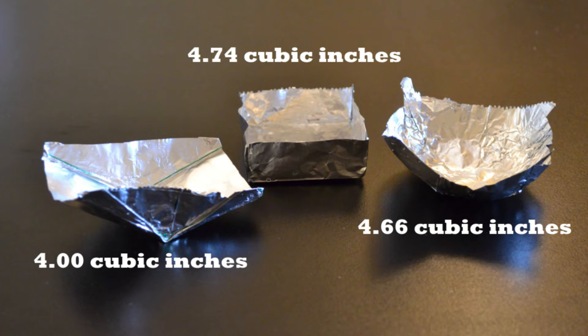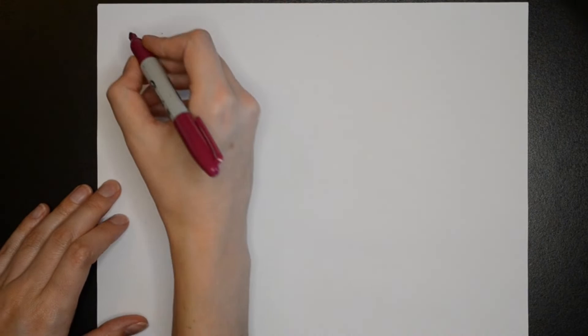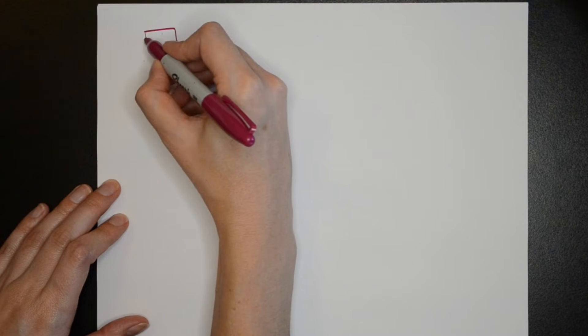Now that we know the maximum volume for each shape how do we figure out how many pennies each boat can hold? First we need to understand what makes a boat or any object float.